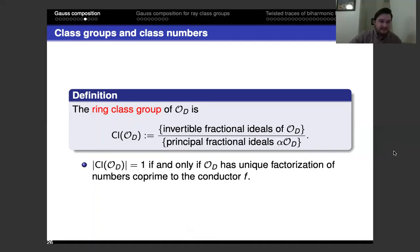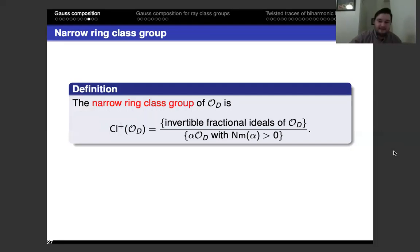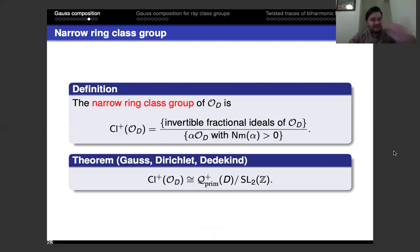The class number is 1 if and only if O_d has unique factorization of numbers co-prime to the conductor f — and you have to insert that co-primality condition or it won't be true. Now we want to tie things back to quadratic forms. We need to introduce the narrow ring class group, which is almost the same definition except we're modding out by a slightly smaller subgroup — principal fractional ideals whose generator has positive norm — giving a slightly larger group.